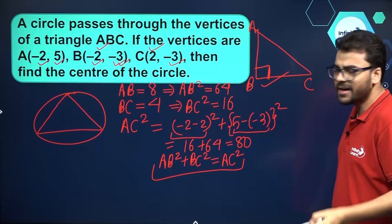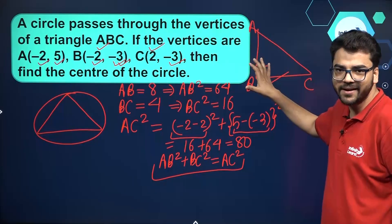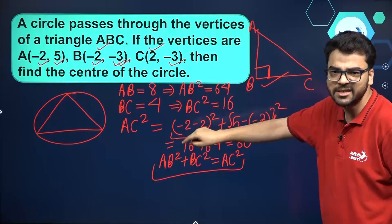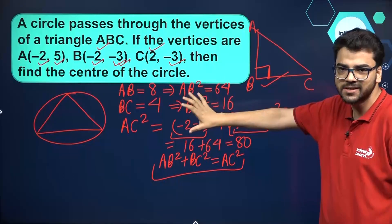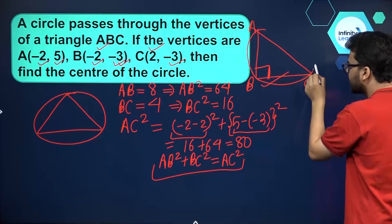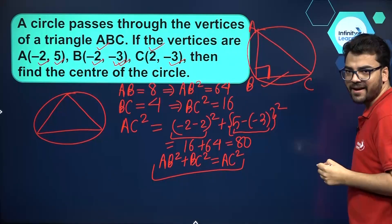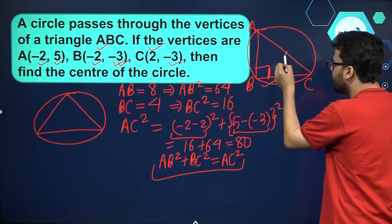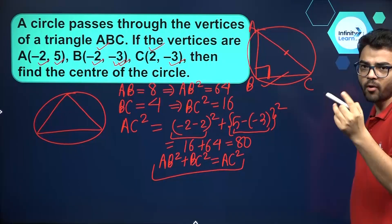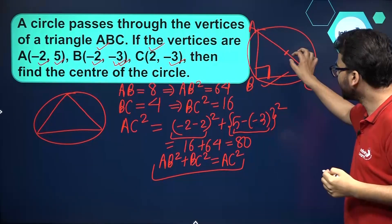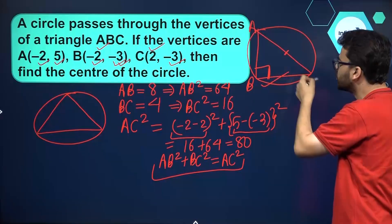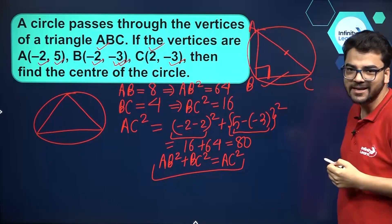We need to find the circumcenter of this right-angled triangle. When you have a right-angled triangle, the circumcenter is the midpoint of the hypotenuse. So we need to find the midpoint of line segment AC, which is the hypotenuse.